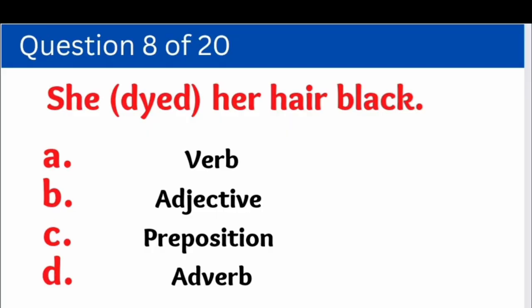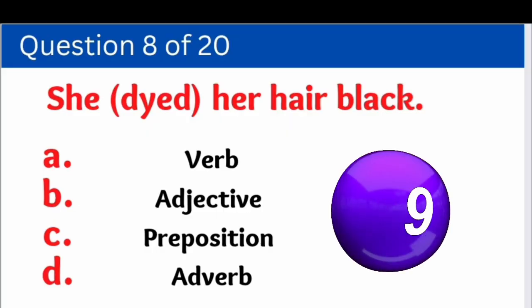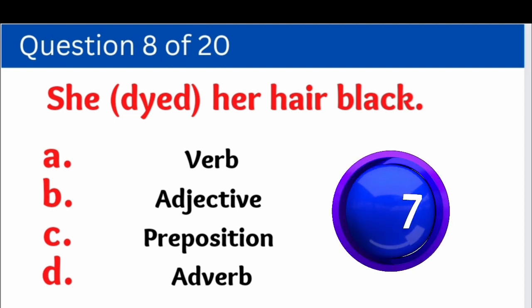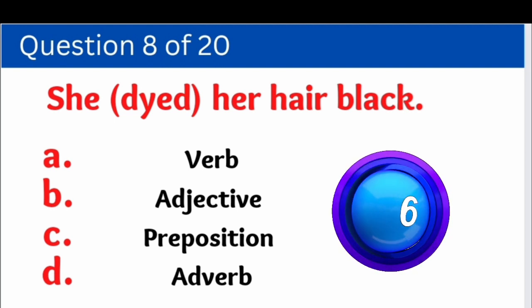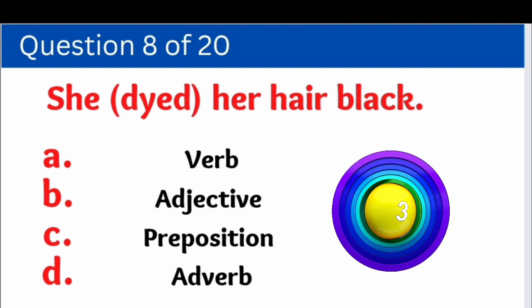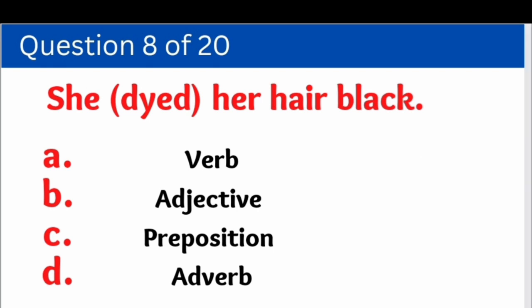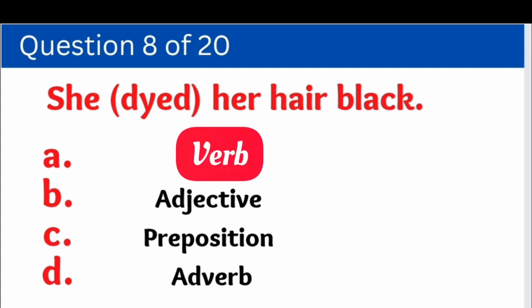Question number eight: 'She dyed her hair black.' Here we have to identify how 'dyed' is used as which part of speech. Options are: A. Verb, B. Adjective, C. Preposition, D. Adverb. And the right answer is option A — that is, verb.